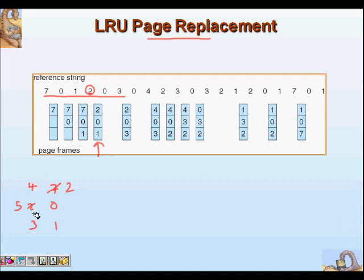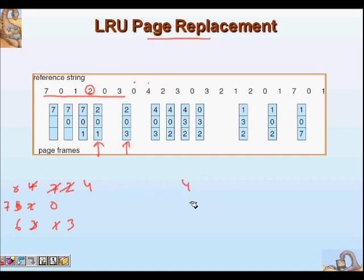Page three comes in next; it's not in memory. We find the oldest page, which is page one, remove it, and bring in page three at time instant six. So we now have two, zero, and three. Then page zero comes — it's there, so we update its timestamp to seven. Next, page four comes in; it's not there, so we find the victim — page two is the oldest with time eight. We remove it and bring in page four, giving us four, zero, and three with timestamps eight, seven, and six.